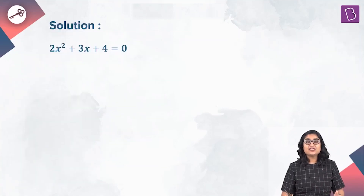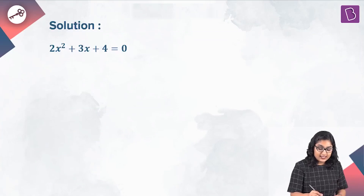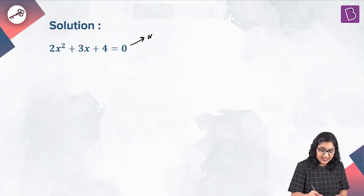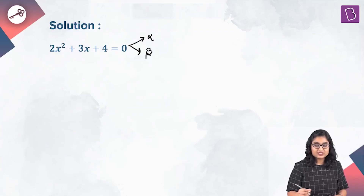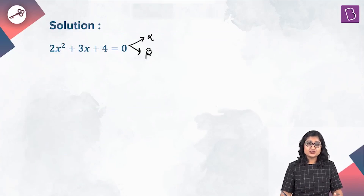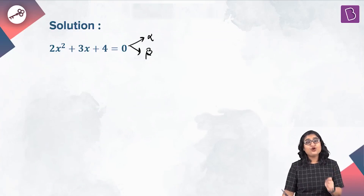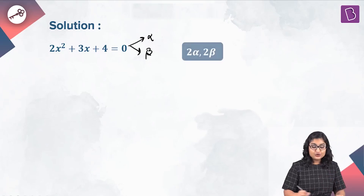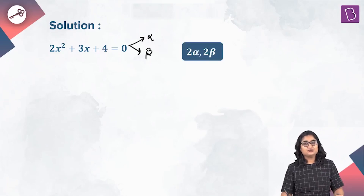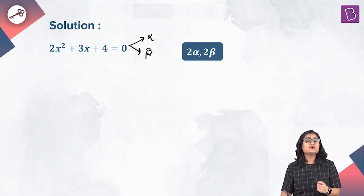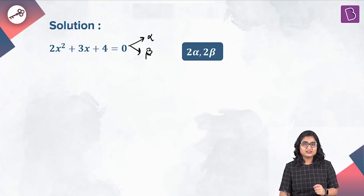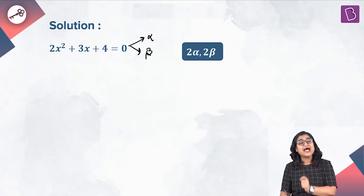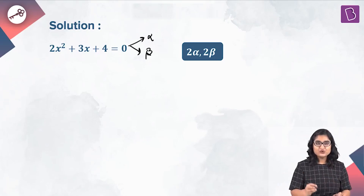This is the quadratic equation given in the question. If alpha and beta are the roots of this quadratic equation, then we have to frame a quadratic equation whose roots are given by 2 alpha and 2 beta. As you can see, the same transformation is being applied to alpha and beta, so we are going to apply that same transformation to x.